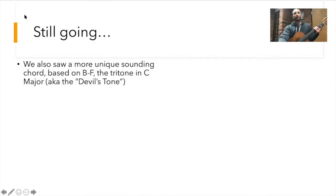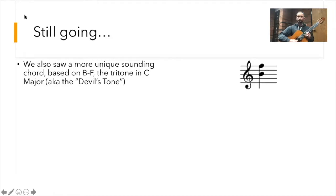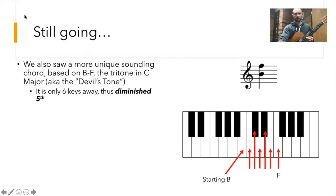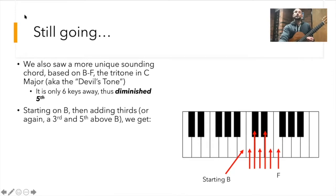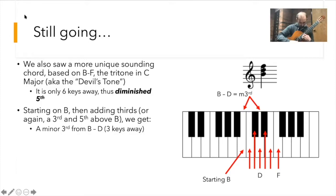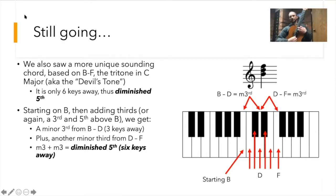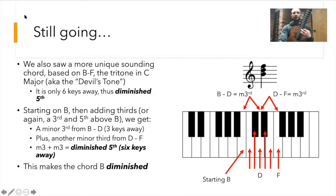There's still another chord we talked about, based on that unique sounding chord with B to F — the tritone in C major, the devil's tone. B to F is only six keys away, or six frets. Starting on B and adding thirds: B to D is a minor third — three keys away — and then another minor third, creating the diminished fifth, six keys away. That gives it this B diminished quality. All other chords in major keys are either major or minor with perfect fifths, except this one. It has a spooky quality to it.